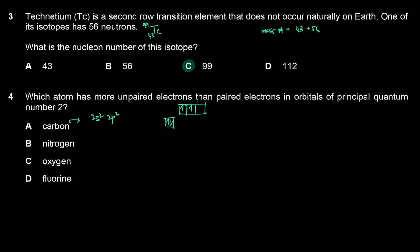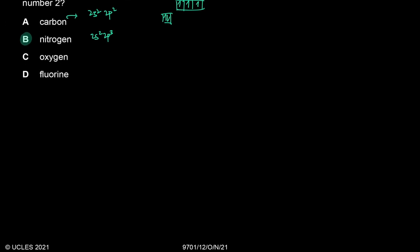For oxygen it's 2p⁴, so you have four paired electrons and two unpaired. For fluorine, you just have one unpaired. So the answer is B — nitrogen.